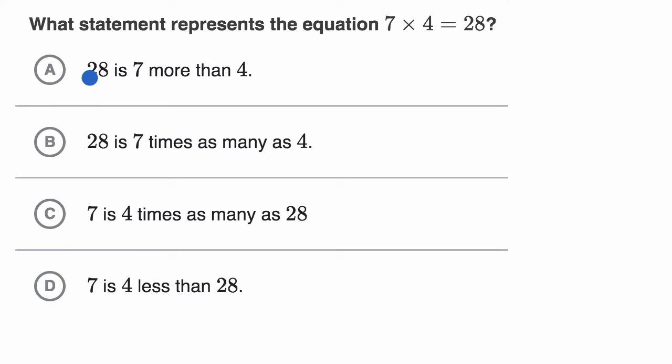So let's see, choice A says 28 is seven more than four. First of all, that's not true. But if you were to write this comparison as an equation, this would be that 28 is equal to seven more than four, which is seven plus four. Not only is that not true, but that's not the original equation. So we rule that out.